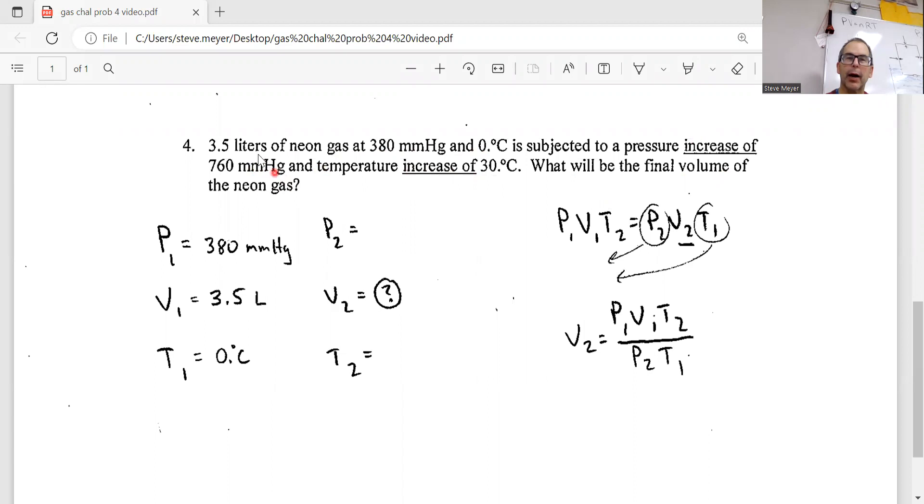Okay, this looks like I got liters as a volume, millimeters mercury as a pressure, zero degrees Celsius as a temperature, and it looks like I got another pressure and another temperature, so I got to find a volume. This definitely looks like a P1V1T2 equals P2V2T1 problem.